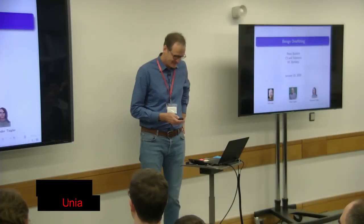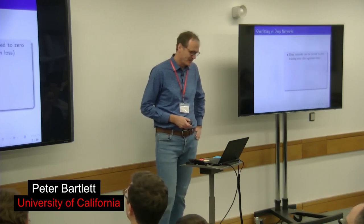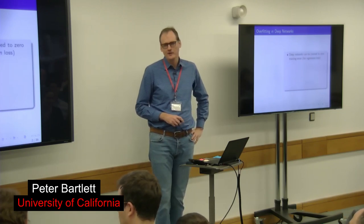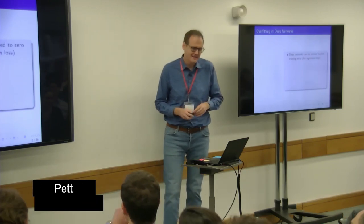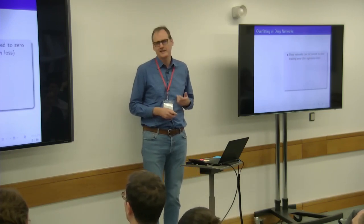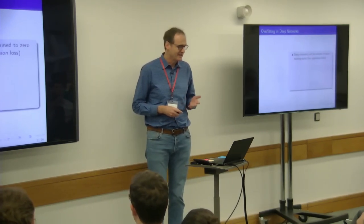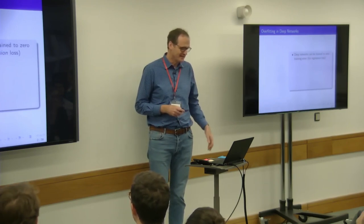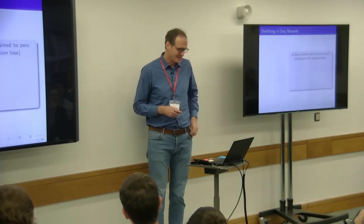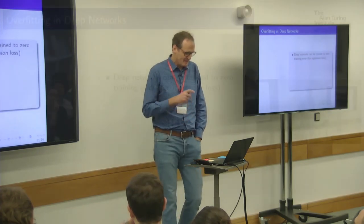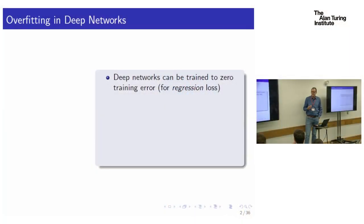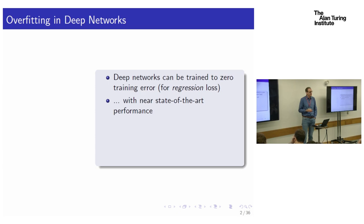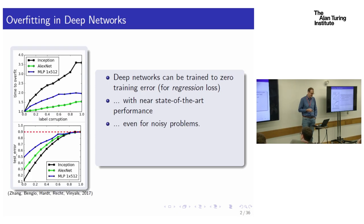We're interested in a phenomenon observed in deep networks. All that I'm going to say that's rigorous here is about the linear case — nice classical things, but in a somewhat unusual setting. This phenomenon is that deep networks can be trained to zero loss on the training data, even with regression losses, and still give pretty good predictive accuracy — which is really rather striking, even on noisy problems.